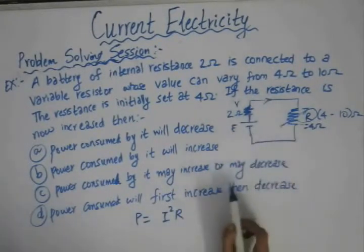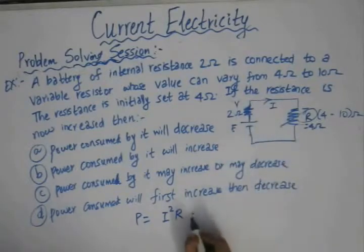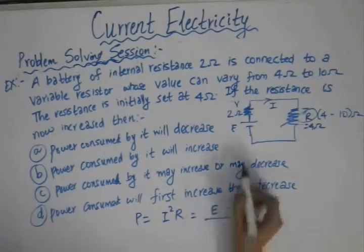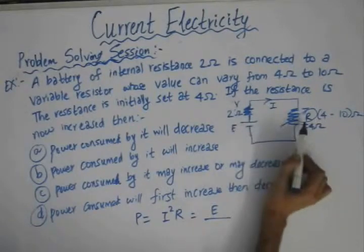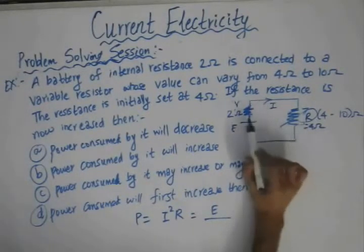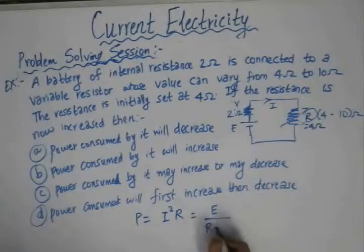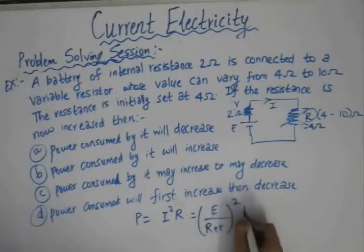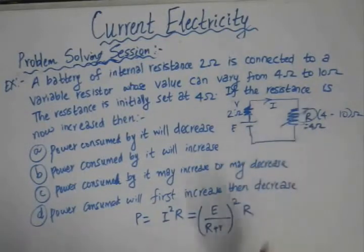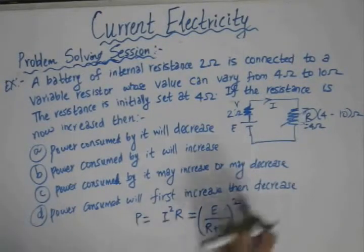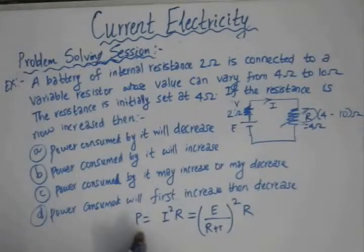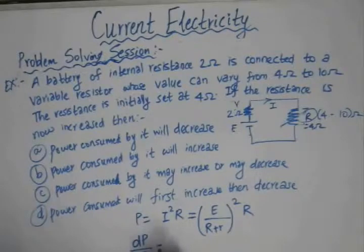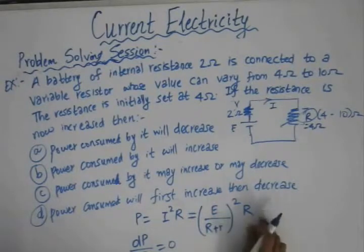As per the circuit diagram, the current I flowing through the circuit would be the total EMF divided by the total resistance. Since small r and capital R are connected in series, the total resistance is r plus R. So the power consumed by external resistance R is E squared divided by (r plus R) squared, times R. To maximize this power, we differentiate with respect to R and equate to zero.